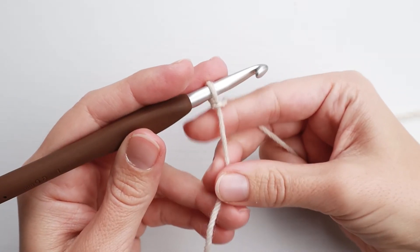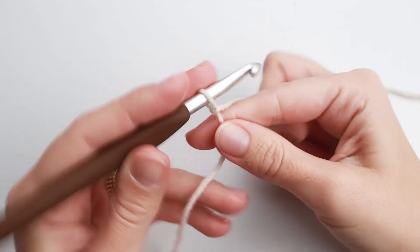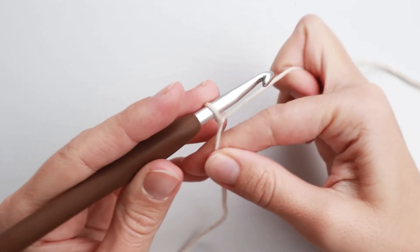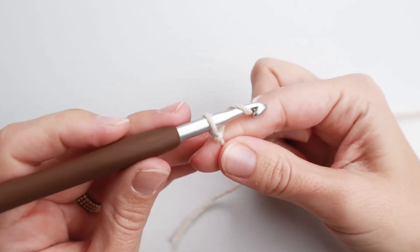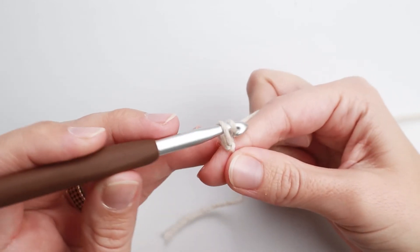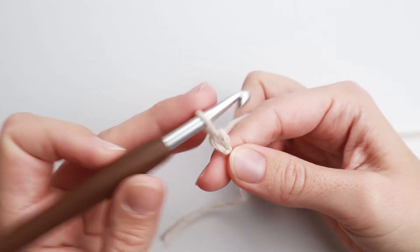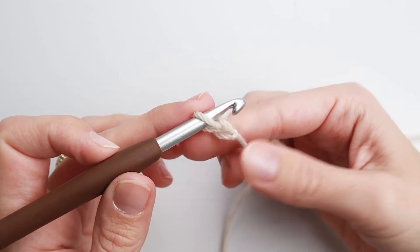Now I'm gonna do some chain stitches. It's really simple. You just yarn over, grab the yarn and pull the hook back through the loop. So that was my first chain stitch.